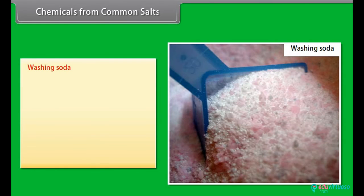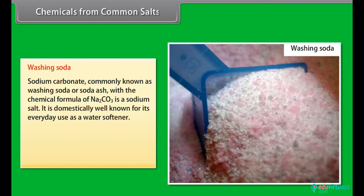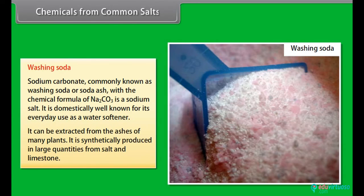Washing soda. Sodium carbonate, commonly known as washing soda or soda ash with the chemical formula of Na2CO3, is a sodium salt. It is domestically well known for its everyday use as a water softener. It can be extracted from the ashes of many plants. It is synthetically produced in large quantities from salt and limestone.